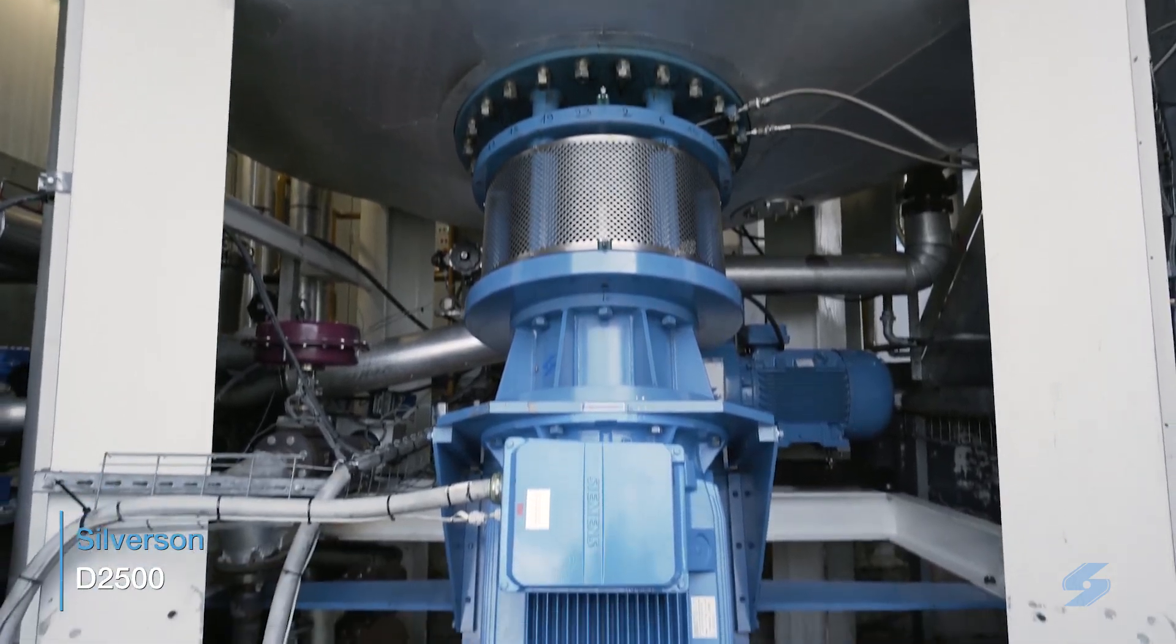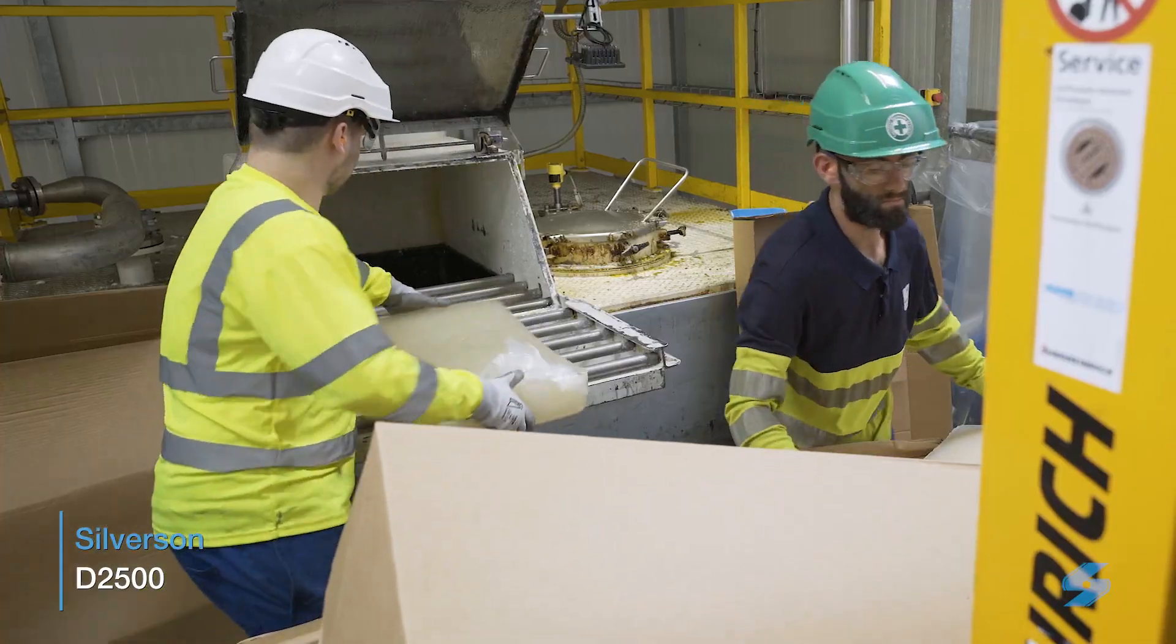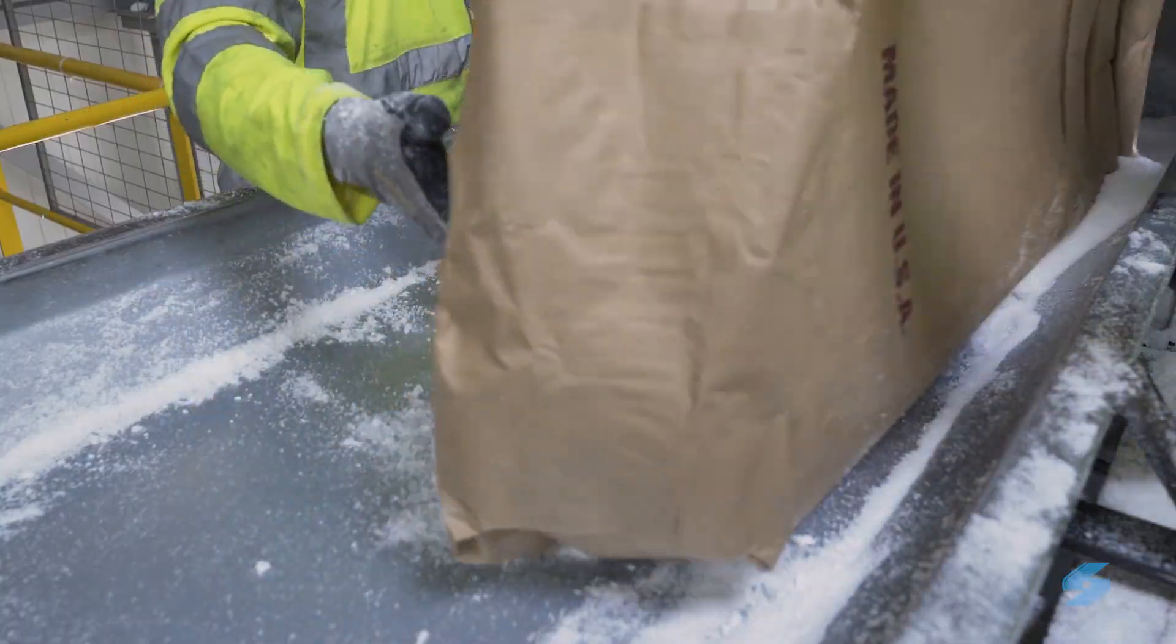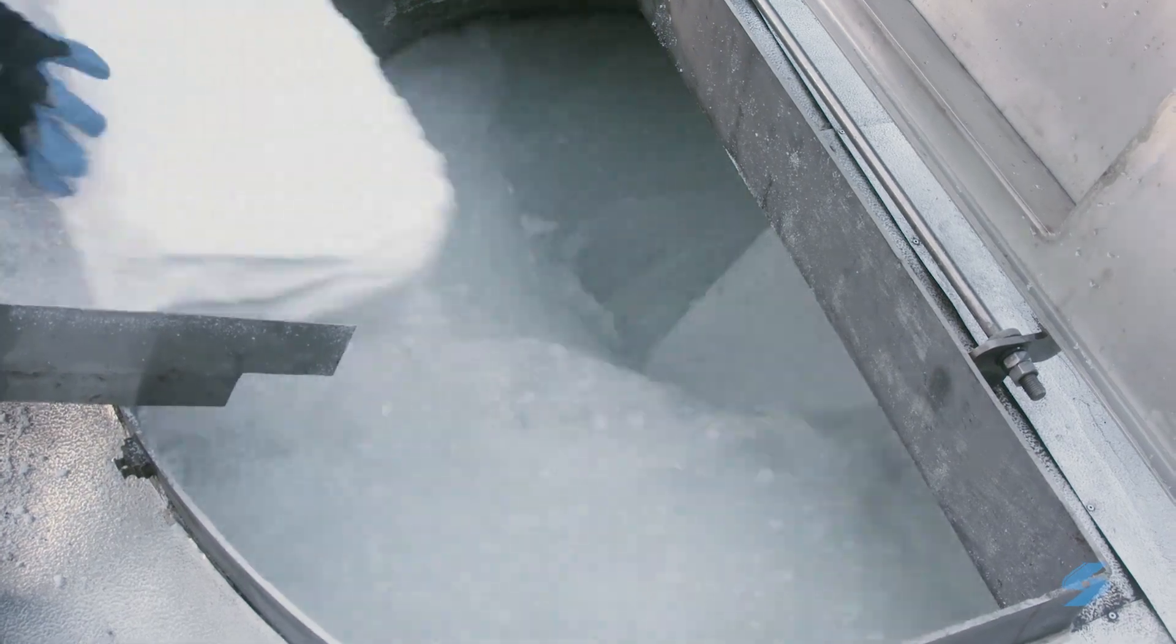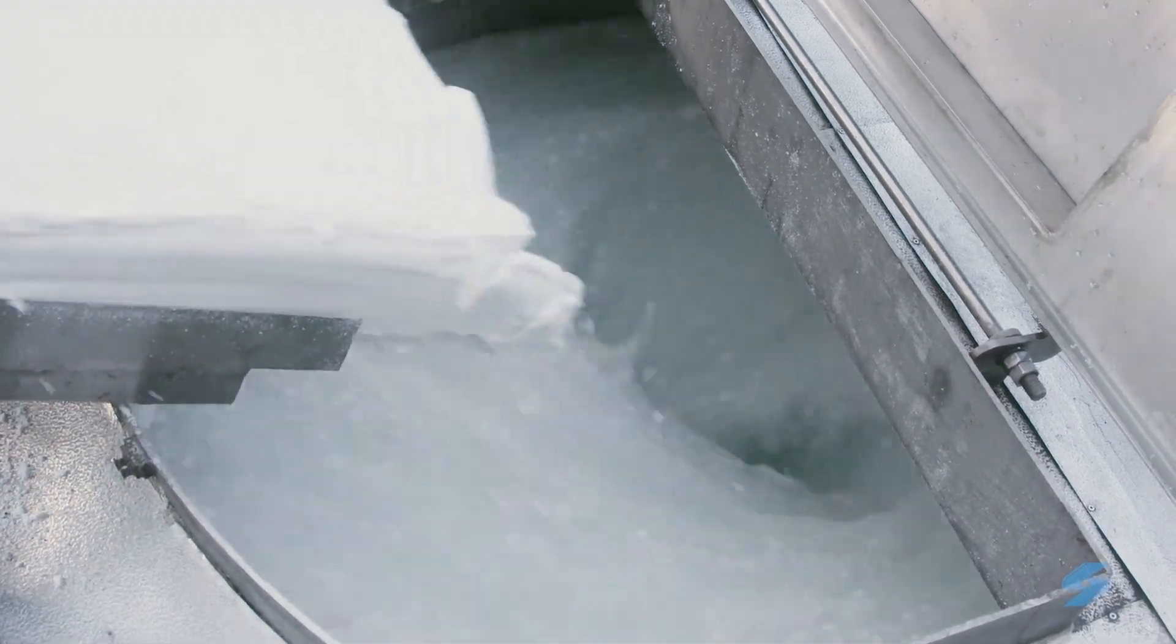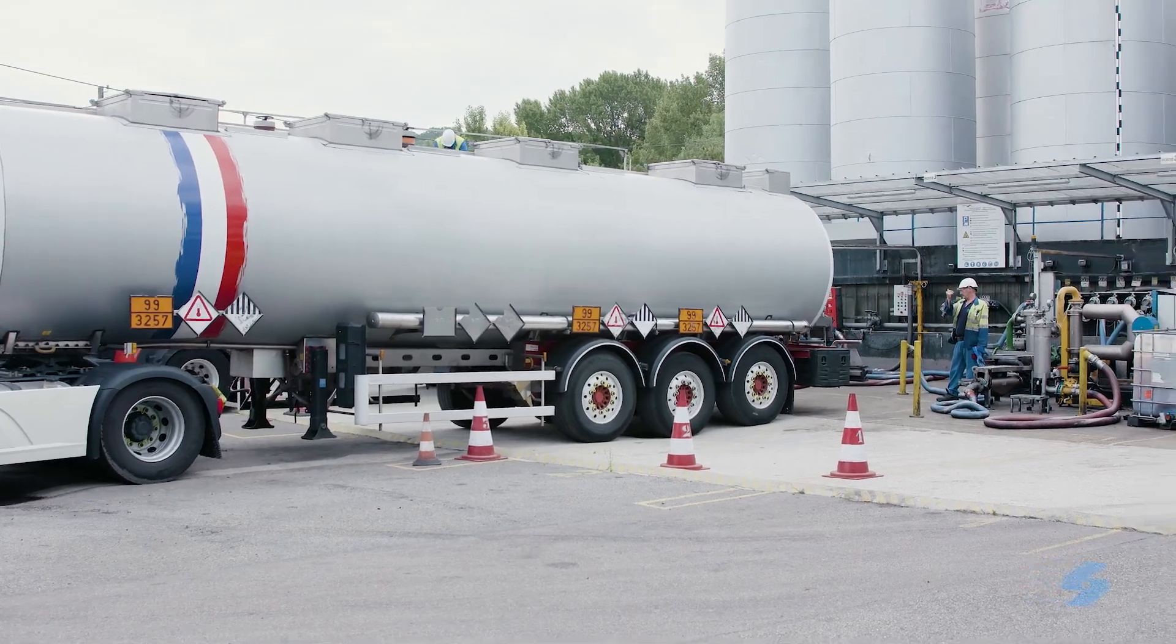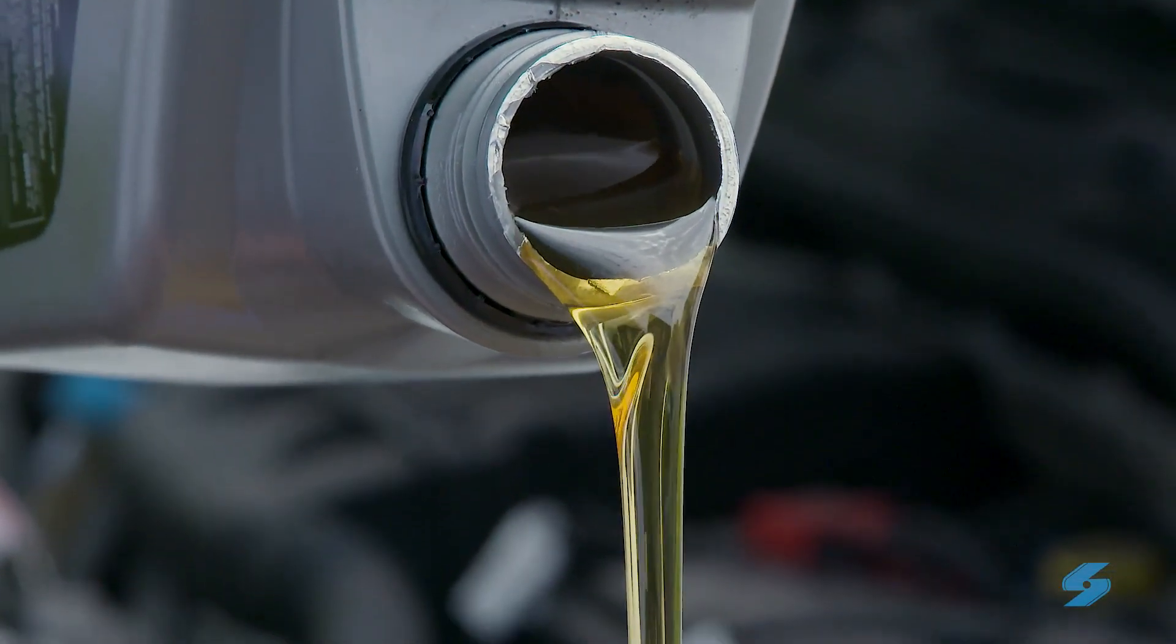Silverson's D2500 is designed to disintegrate, solubilize, or disperse the largest of solids in a single operation, and can process whole bales of polymers and rubbers without the need for preliminary chopping or crumbing. This unique system is used by many of the world's major oil companies for the production of viscosity index improvers for lube oils.